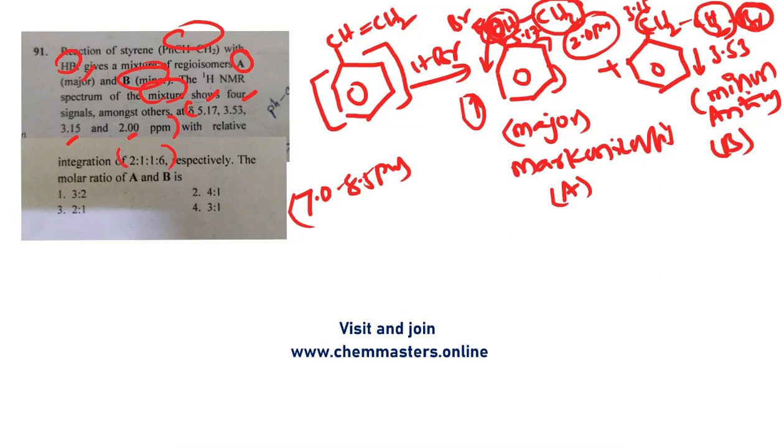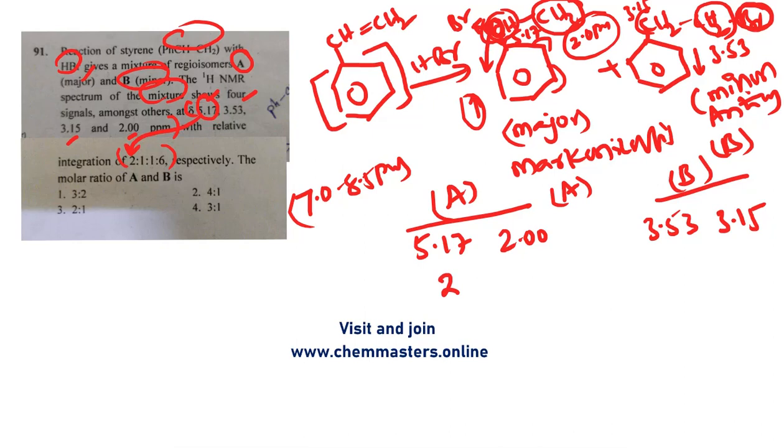After predicting chemical shift values on appropriate HNMR active protons, just try to take them here. We can say 5.17, next 2 ppm value, and for this minor product 3.53 and 3.15. This is for major product A and this is for minor product B. After that, take the integration values: 5.17 belongs to integration ratio 2, so 2 here, then 3.53 with 1, 3.15 with 1, and 2 ppm chemical shift value belongs to 6 integration value.